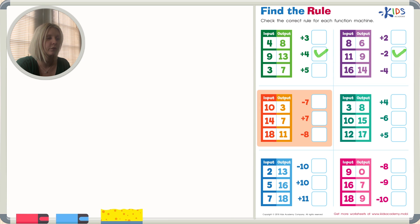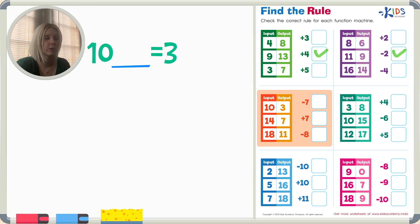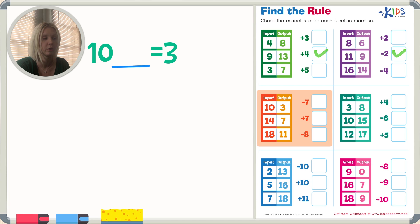Now let's go down to our orange function machine. We start with 10, and we do something to get 3. Are we going to take away 7, add 7, or subtract 8? We start with 10 and end up with 3 — are we adding or subtracting? We have to subtract to get a lesser number, so I know it's either minus 7 or minus 8. Let's start with minus 7.